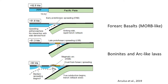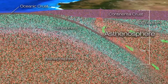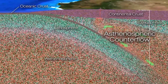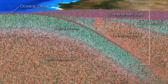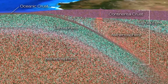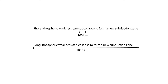Juxtaposition of old, dense oceanic lithosphere with buoyant lithosphere — which can be young oceanic lithosphere or continental lithosphere — is required for the asymmetry of a sinking plate and an overriding plate, the essence of a subduction zone. A long lithospheric weakness is required because the future down-going plate must flex to allow asthenosphere to well up over it to start the subduction initiation process. Without these two conditions, it is very difficult to start a new subduction zone.